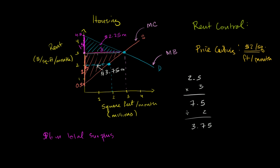At 2 million square feet per month, the marginal benefit is much higher than the marginal cost — the marginal benefit of an extra unit is over $3, while the marginal cost is around $2. In a free market, builders would supply more units. But because the price can't exceed $2, there's no incentive to build more or offer existing units, since suppliers can't cover their marginal cost.